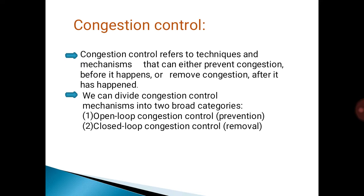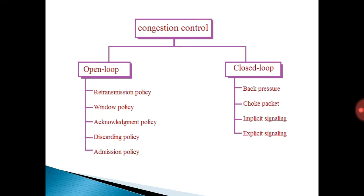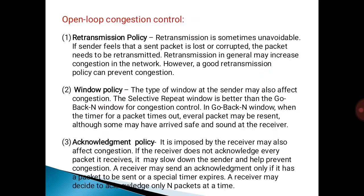The two types are open loop congestion control and closed loop congestion control. In open loop congestion control, retransmission policy, window policy, acknowledgement policy, discarding policy, and admission policies are used. In closed loop congestion control, back pressure, choke packet, implicit signaling, and explicit signaling are present.